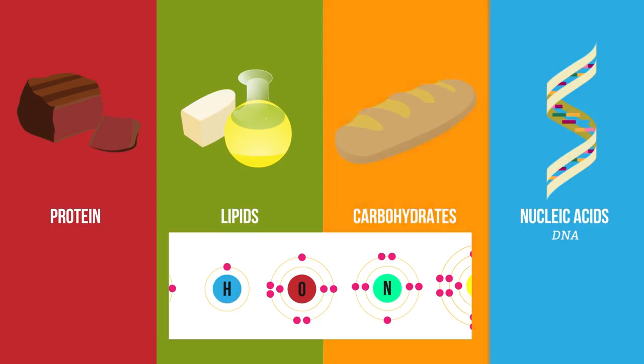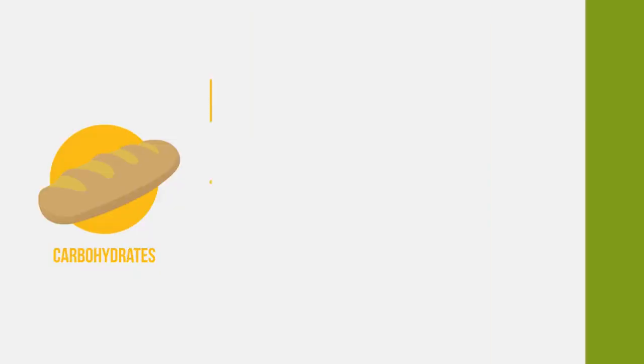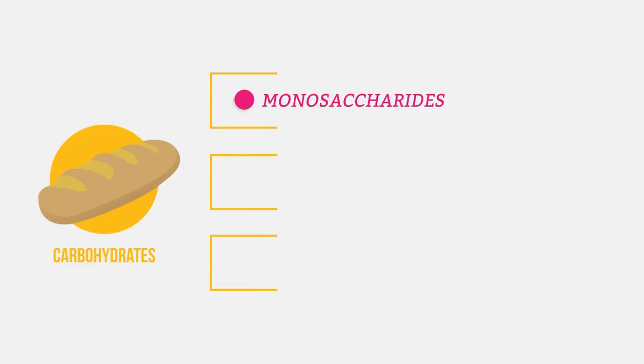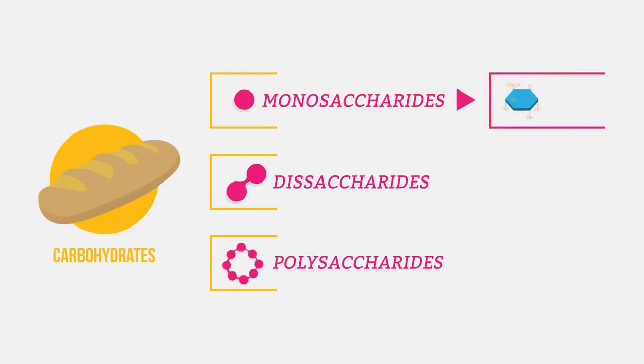Let's start by looking at carbohydrates. There are three main types of carbohydrate: monosaccharides, disaccharides and polysaccharides. Simple sugars like glucose and fructose are monosaccharides.